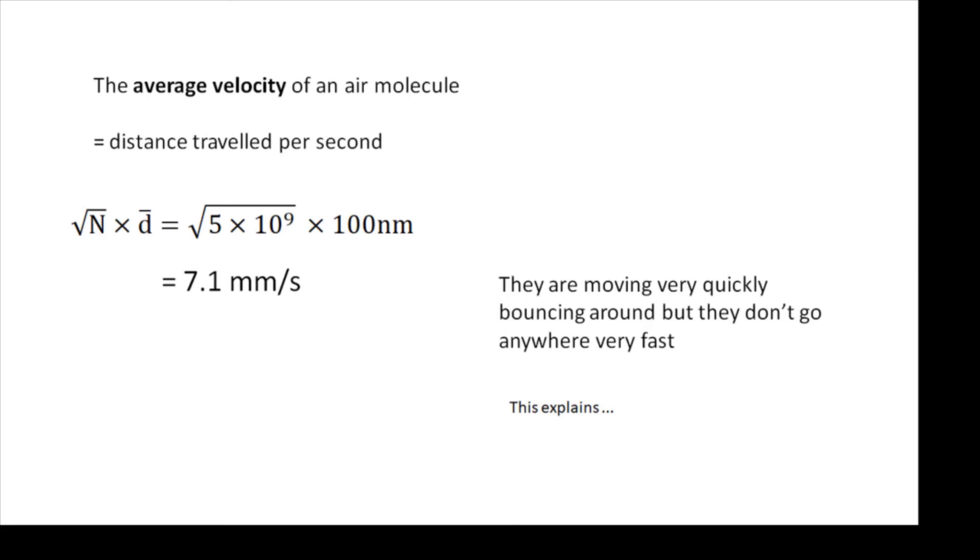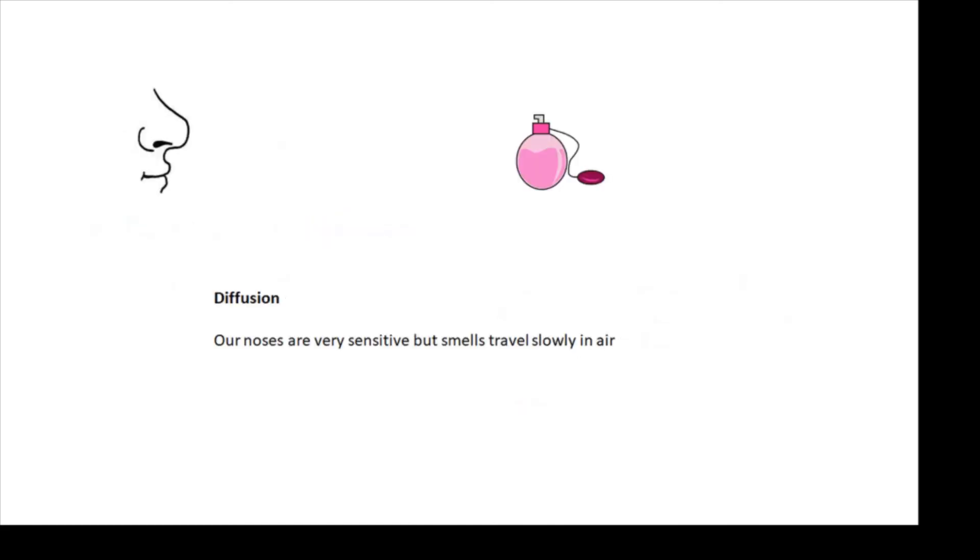Now one of the things that this explains is diffusion. If somebody sprays some perfume several meters away, then it will take a little while for you to actually smell it, despite the fact that the perfume molecules have a very very high RMS speed. Their average velocity isn't very much, and despite the fact that your nose is very sensitive, it'll take a while for them to get to you.